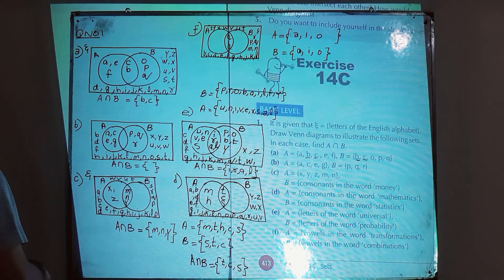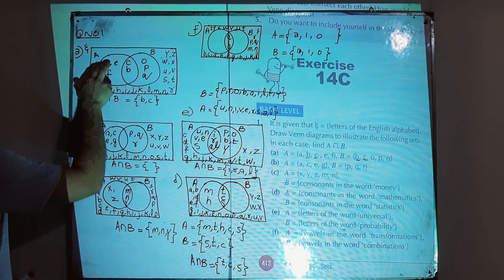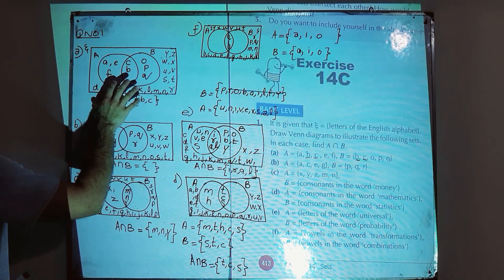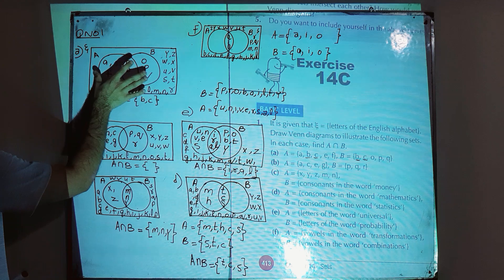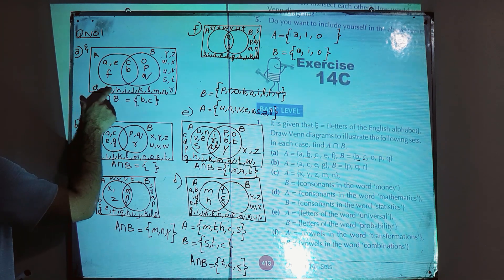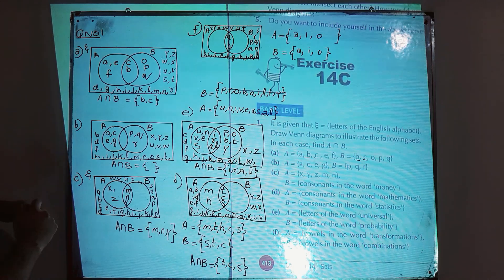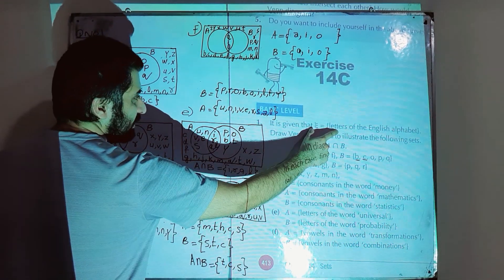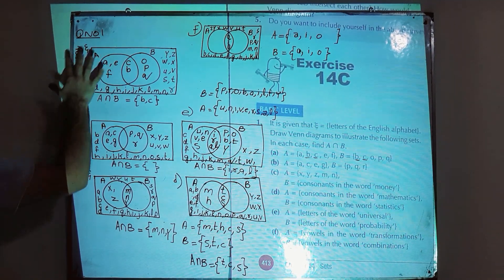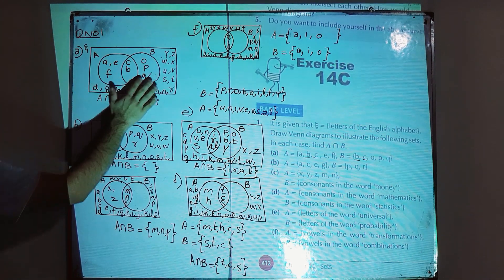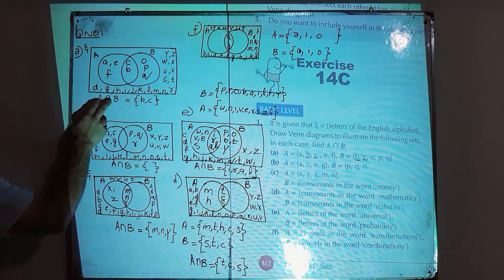You also need to write the rest of the English alphabets — those other than the ones already in A and B — outside the circles but within the rectangle, because the universal set is the letters of the English alphabet. So this rectangle must contain all English alphabets: some are in the circles of A and B, while the rest are written outside the circles but still inside the rectangle. This completes the Venn diagram.